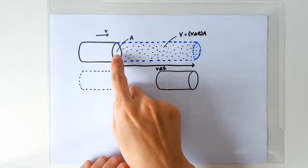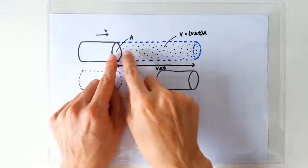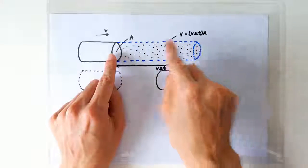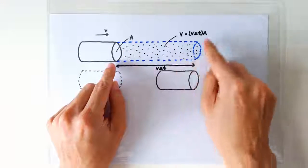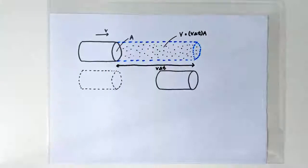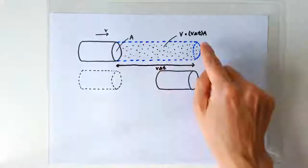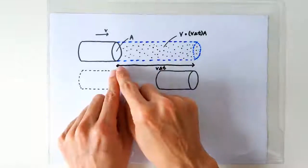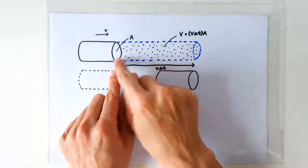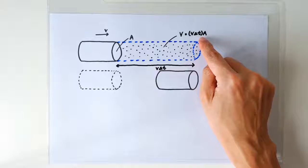So in this amount of time delta t, this cylinder would have encountered all the air molecules in this cylindrical volume. And the volume of this cylindrical volume is V delta t times A.